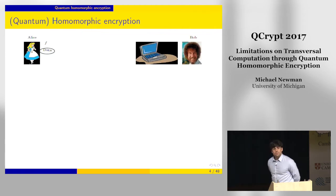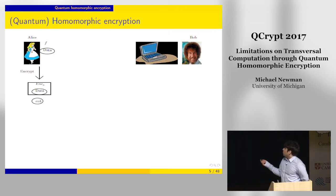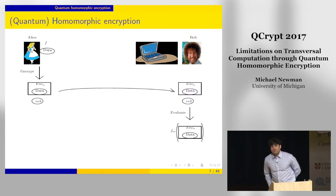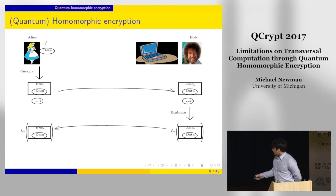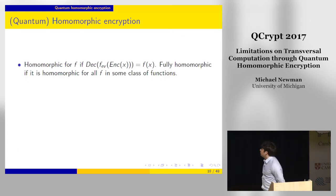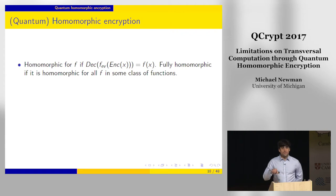Informally, homomorphic encryption is a way that a party Alice can delegate computation of some function f on some data to a second party Bob without sacrificing the privacy of that data. Alice encrypts her data and sends it to Bob. Bob applies some evaluation on the ciphertext directly, and when Alice decrypts, she finds that the function f has been applied correctly to the underlying plaintext. A scheme is homomorphic for function f if there's some evaluation function that commutes with the encryption and decryption functions—an evaluation you can apply to the ciphertext that correctly applies the function on the underlying plaintext.